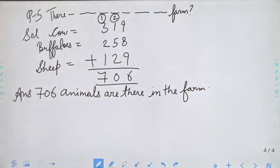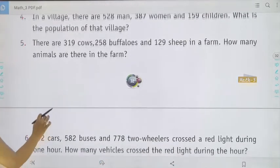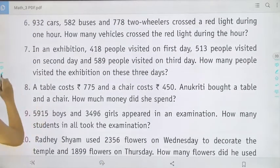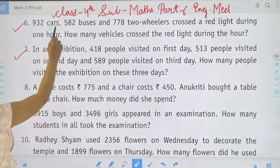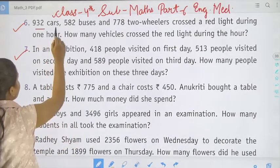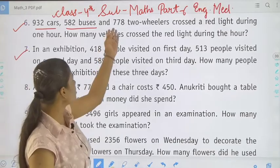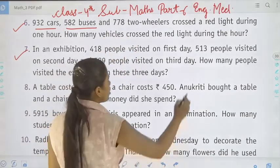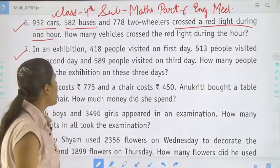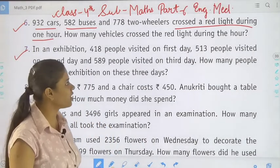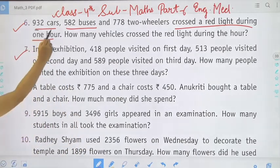Now move to the next question, that is question number 6. 932 cars and 582 buses and 778 two-wheelers crossed a red light during one hour. How many vehicles crossed the red light during the hour? Students, 932 cars,